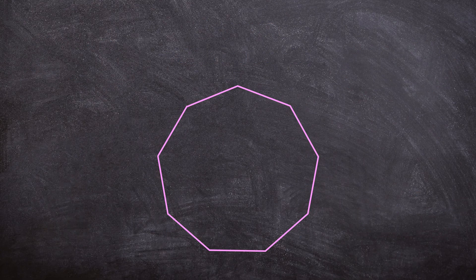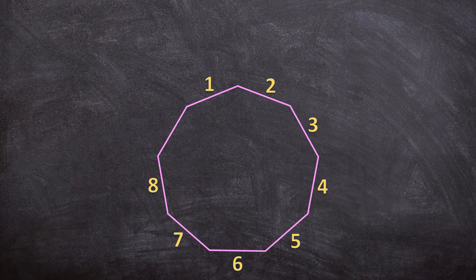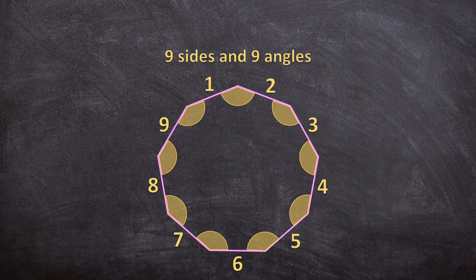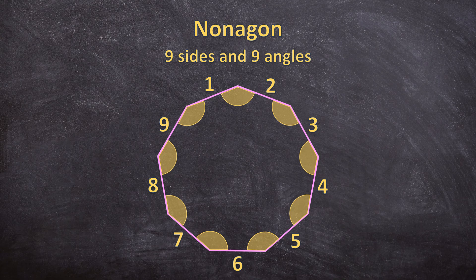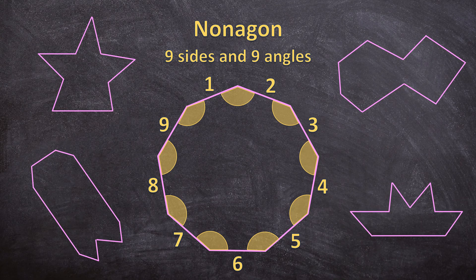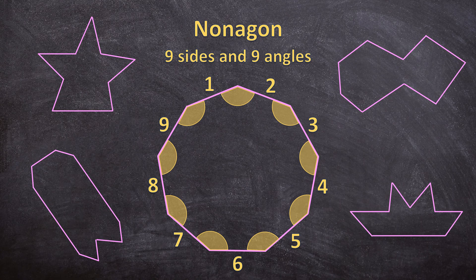This polygon has 9 sides and also 9 angles. So this is called a nonagon. And here are a few more examples of nonagons. They all have exactly 9 sides and 9 angles.